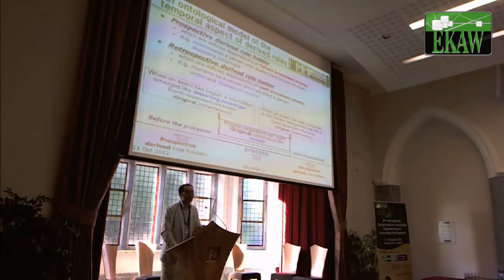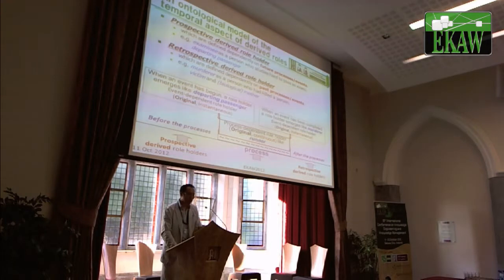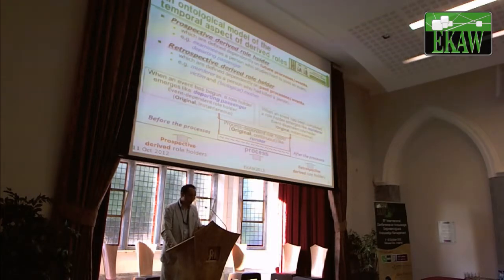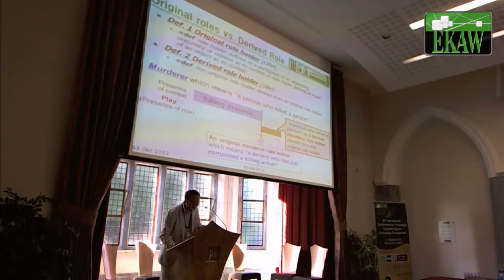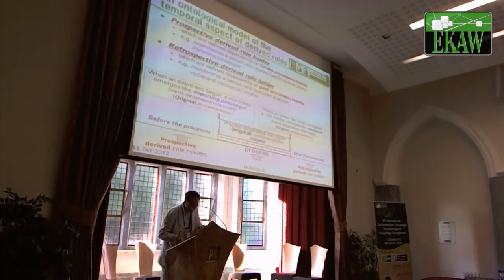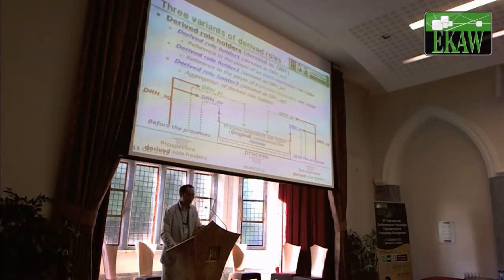We can classify two kinds of derived roles. The first one is a prospective derived role holder, which is defined dependent on a future process or event. The other one is a retrospective derived role holder, which is defined dependent on a past process or event. In detail, we can define three variants of derived role holders.